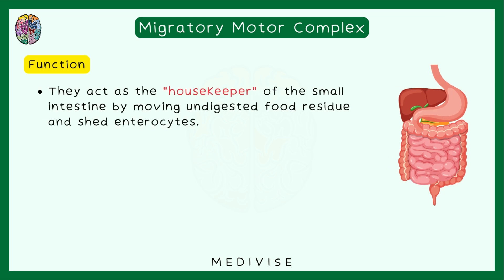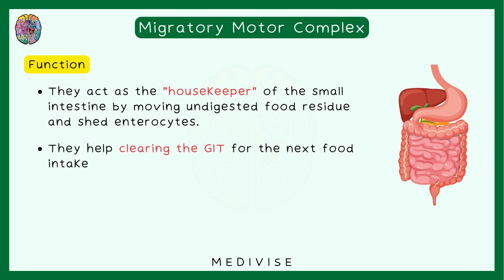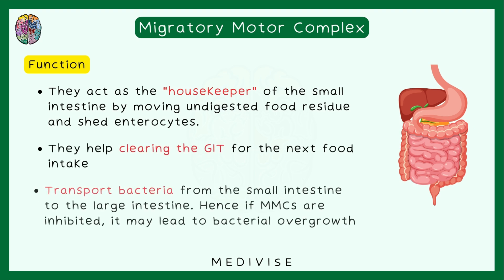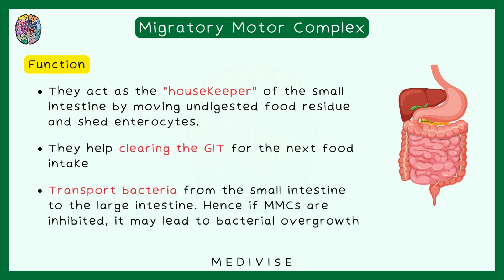This is where the migratory motor complex comes in. MMCs act as a housekeeper of the small intestine by clearing out food residue and shed enterocytes, effectively sweeping the whole GIT and clearing it for the next meal. They are also helpful in transporting bacteria from the small intestine to the large intestine. If there is any problem with the MMCs, there will be a buildup of bacteria in the small intestine, leading to bacterial overgrowth.